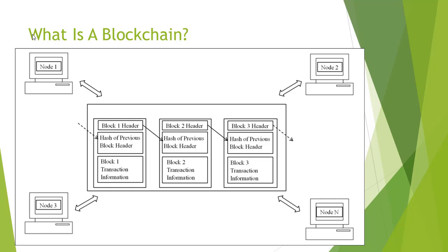The underlying technology of Bitcoins is blockchain technology. A blockchain is a chain of blocks. A block is just some storage space in a computer system — about one megabyte of computer storage. In each block, we record the following information: block header information, hash of a previous block header, and the transaction information.